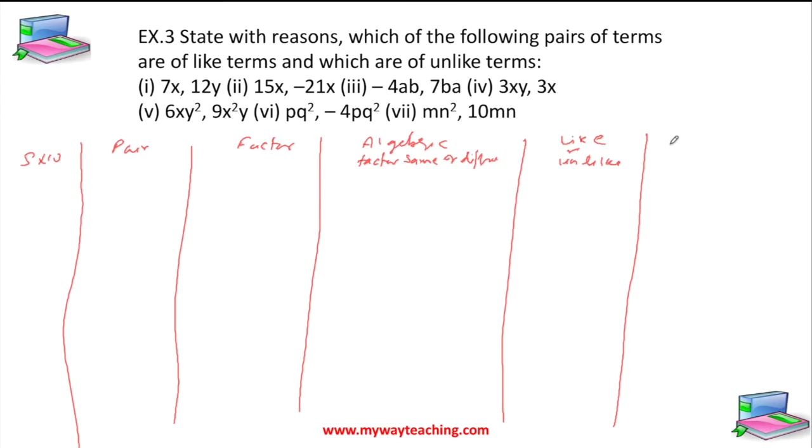Here we can put remarks if something is there. The first pair is 7x and 12y. What are the factors? The algebraic factors are x and y, which are different, so these are unlike terms.